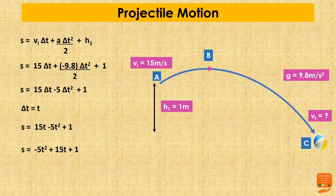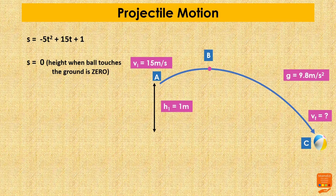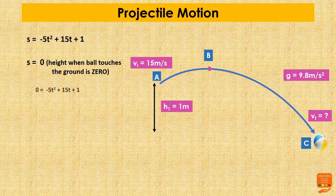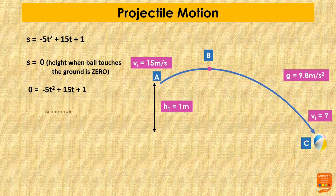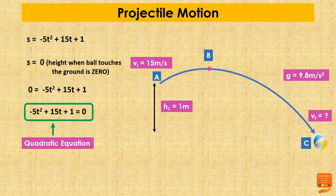This equation is a quadratic equation because the exponent of the first term is 2. When the ball touches the ground, its displacement from the ground is 0, so we set S = 0. The equation becomes: -5t² + 15t + 1 = 0. This is the quadratic equation we will solve using the quadratic formula to find the time at which the ball hits the ground.